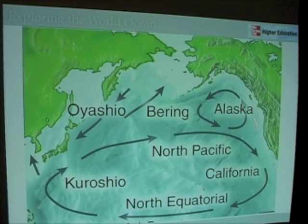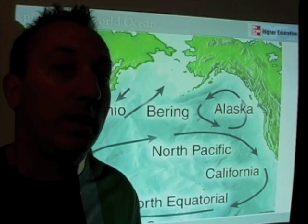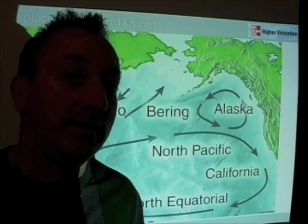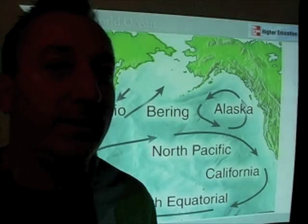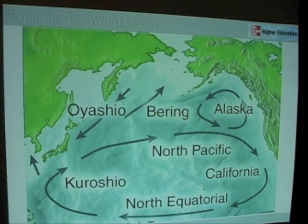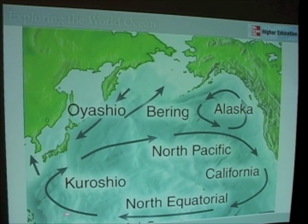The California current should be easy to remember for students living in California. For those in Washington and Oregon — it starts in Washington, but somebody called it the California current, a California-centric view of the world. The California current runs along the eastern boundary of the Pacific Ocean, so it's an eastern boundary current that feeds into the North Equatorial current, which itself feeds into the Kuroshio current. Some of the North Equatorial current probably also feeds the equatorial countercurrent.